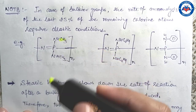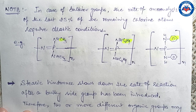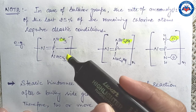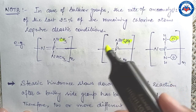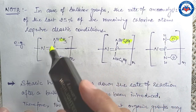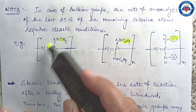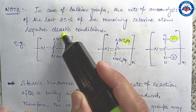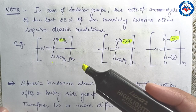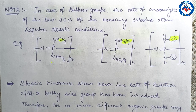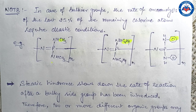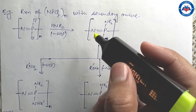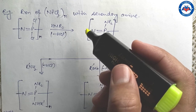In the case of bulkier groups, the rate of replacement of the last 25% of remaining chlorine atoms may require drastic conditions. This means the first 75% of halogens are easily removed, but the remaining 25% — where both halogens are replaced by amine groups — are difficult and require drastic conditions. Steric hindrance therefore slows the rate of reaction. Certain bulky or weak nucleophile organic groups do not replace all chlorine atoms under mild conditions.